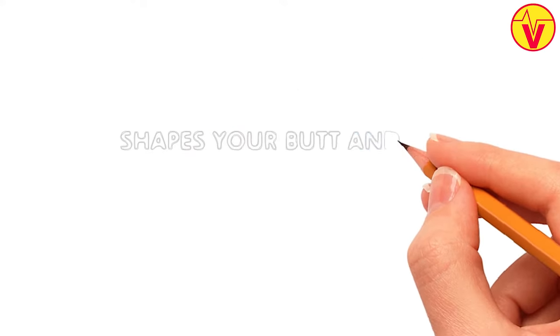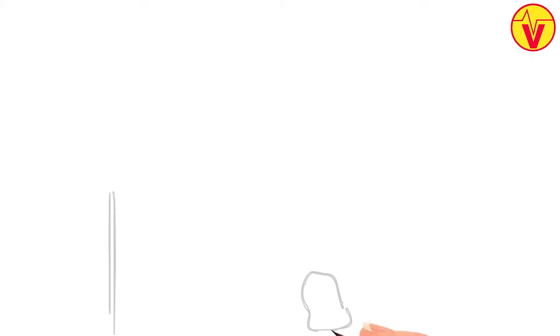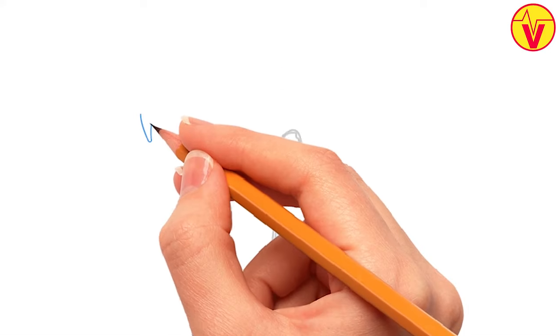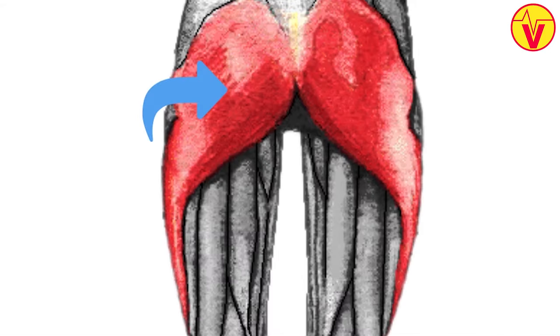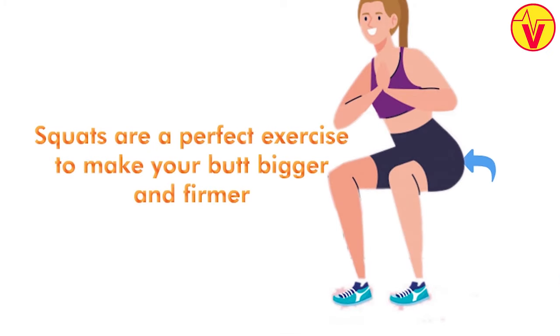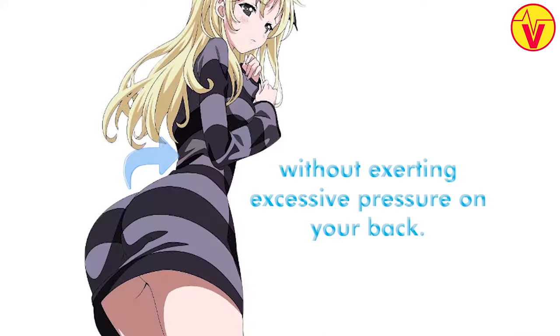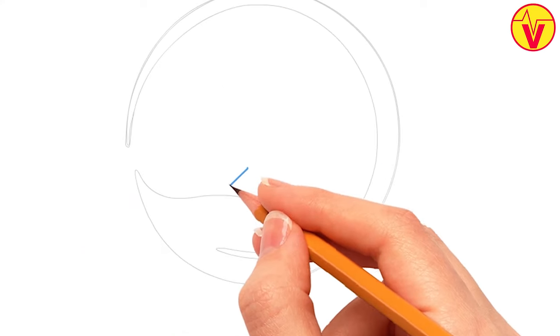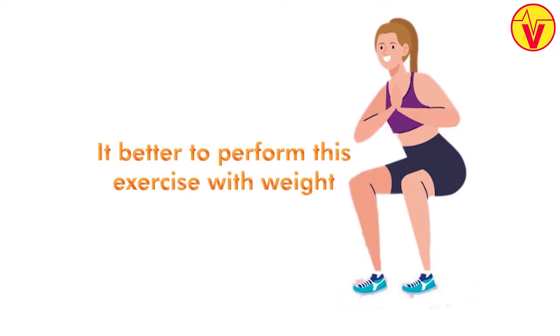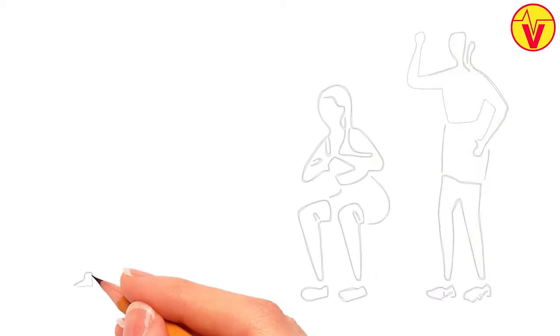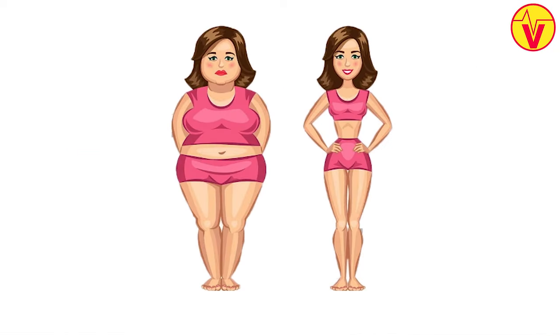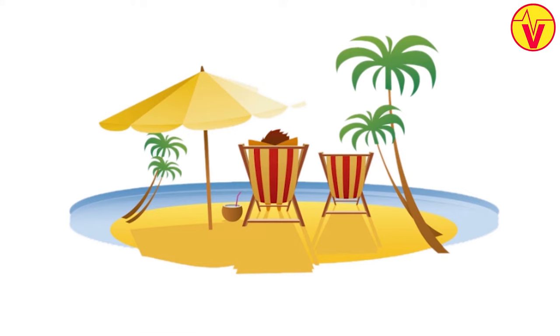4. Shapes Your Butt and Abs. If you want a bigger butt, add squats to your daily workouts. It actively engages numerous muscle groups around the gluteus region. Squats are a perfect exercise to make your butt bigger and firmer without exerting excessive pressure on your back. It can also help to tighten and tone up your abs. It's better to perform this exercise with weight, but you can perform bodyweight squats anytime and anywhere, so you can stay in shape at home or even on vacation.